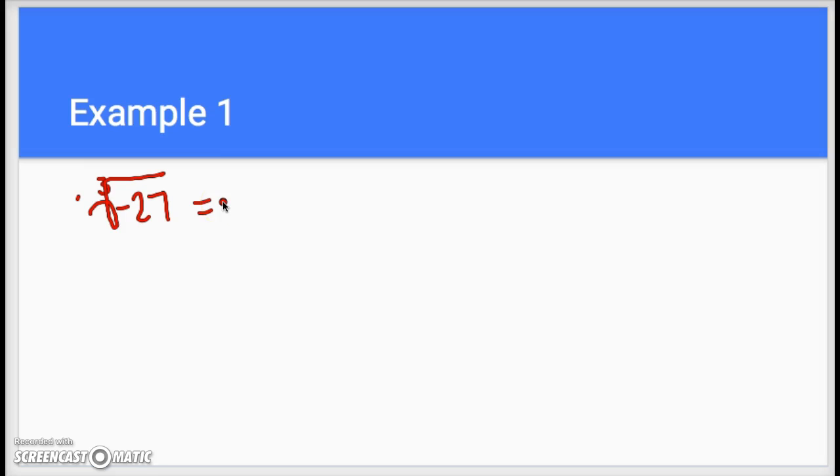Remember we have talked about previously that you can have the cube root of a negative number because a negative times a negative times a negative would give you a negative. So we know this is going to be a negative number. We then just need to figure out what the cube root will be, and that ends up being three. So negative three times negative three times negative three would give you negative 27.